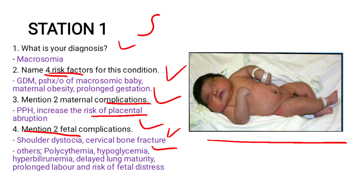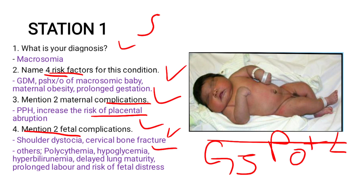Now let's say someone gives birth to this child in this unit. She had four previous pregnancies and all of her children were very big, but the bad part is they used to die at night. So this was the fifth child — she's G5. In terms of parity, all four previous children died, so she's P0 plus four.